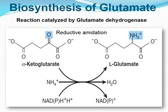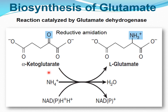Now we are going to discuss the biosynthesis of glutamate. Glutamate is the precursor of the so-called glutamate family of amino acids. Glutamate is formed by reductive amination of the citric acid cycle intermediate alpha-ketoglutarate. This NADPH-dependent reduction is catalyzed by mitochondrial glutamate dehydrogenase. The amino group is donated by ammonium ion, and the reaction strongly favors glutamate synthesis, lowering the concentration of cytotoxic ammonium ion.